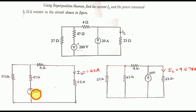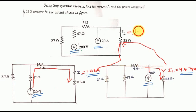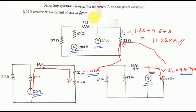From the 200V source, IL' = 1.65A. From the 20A current source, IL'' = 9.578A. Both currents flow in the same direction (top to bottom) through the 23 Ohm resistor, so we add them. Total IL = 1.65 + 9.578 = 11.228A. This is the first part of the answer.